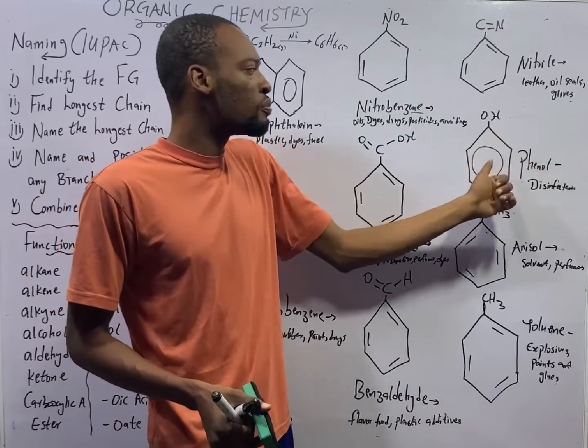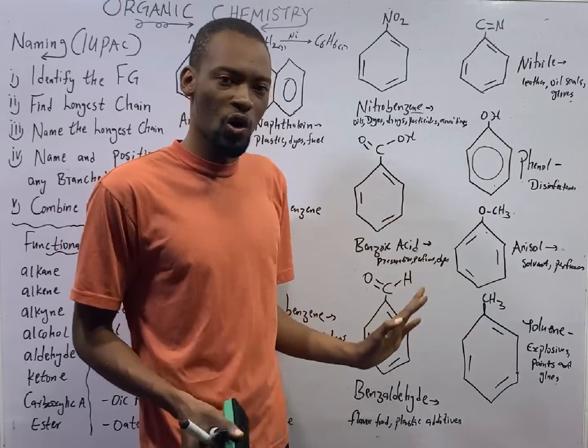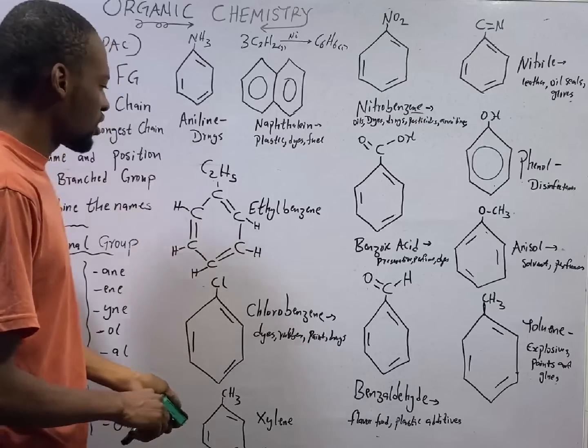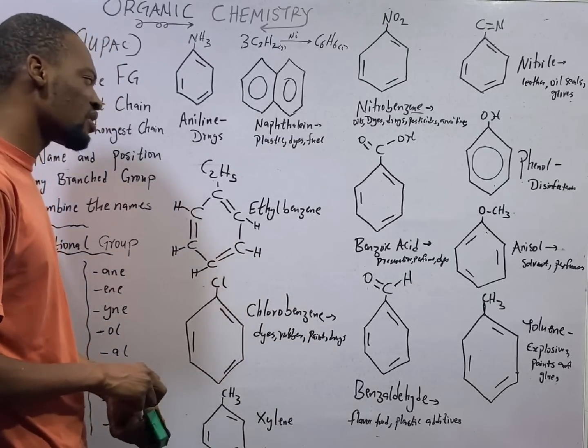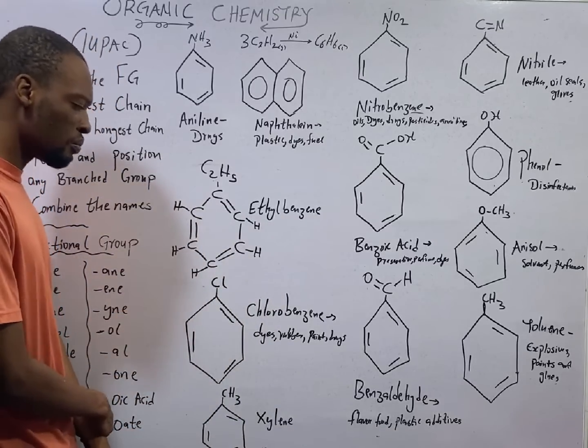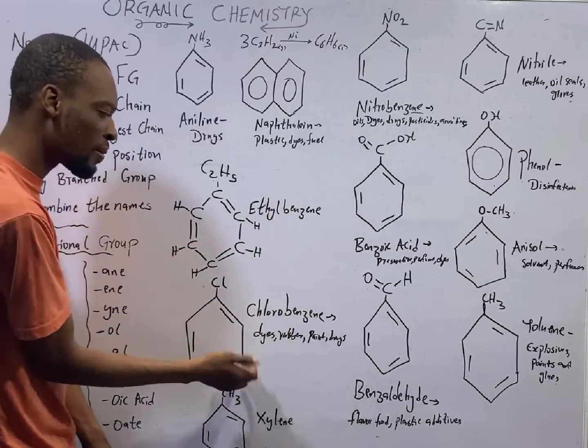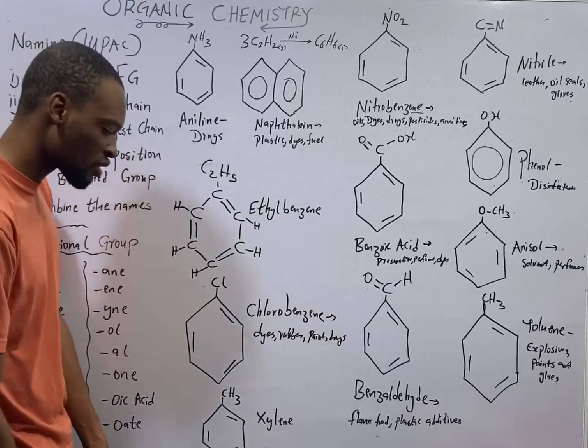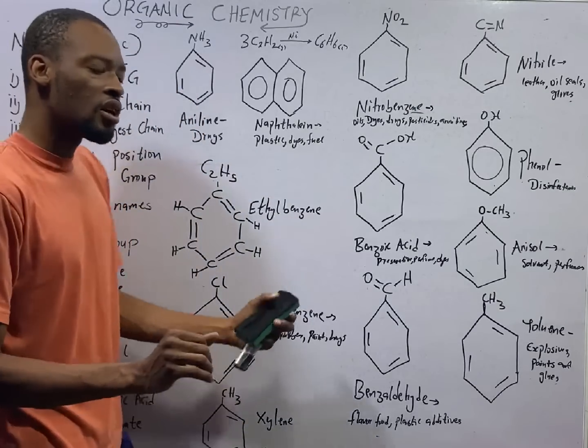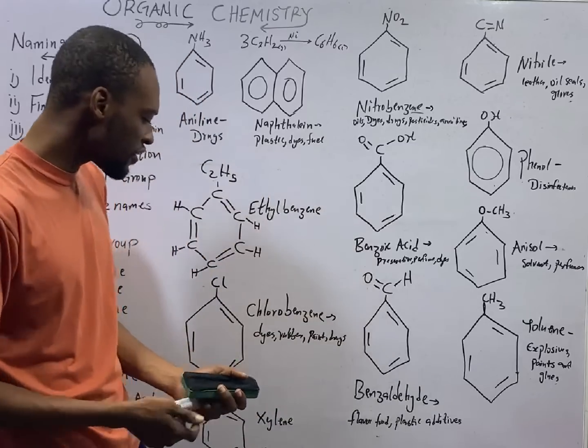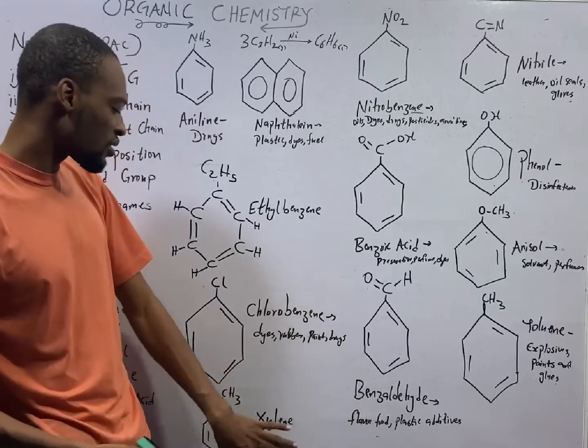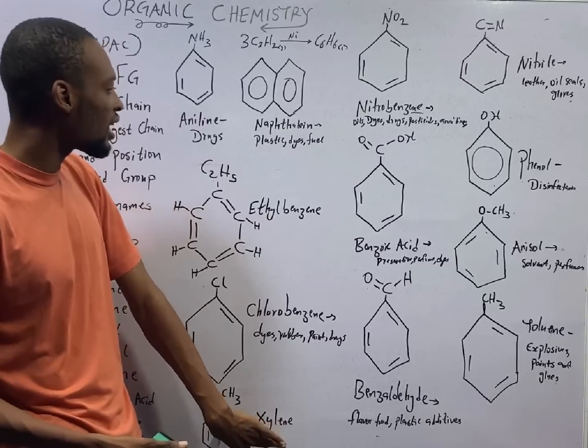Once you add OH group to benzene, the product is called phenol. So phenol is used to make disinfectants. If you add C2H5 to benzene, you form ethylbenzene. If you add chlorine to benzene, you form chlorobenzene. You can use it for dyes, also this for dyes, for rubber, for paint, and drugs, which for this as well. If you put CH3 on top of benzene, and you add another CH3, a benzene with two different CH3s, the name is referred to as xylene. That is the name, xylene. It is used as solvent in printing, as rubber, and it also has fine application in leather industry.